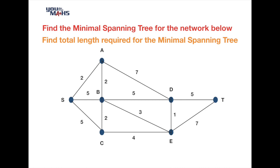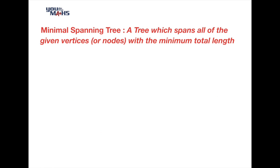In this video we're looking at how to find the minimal spanning tree for a network. A minimal spanning tree is one that connects all of the vertices of a network with the smallest total length. Working backwards from that, a tree is a network with no cycles.